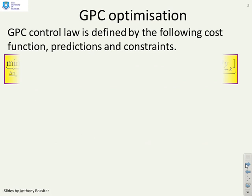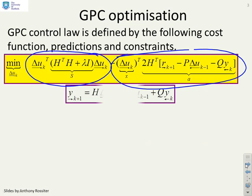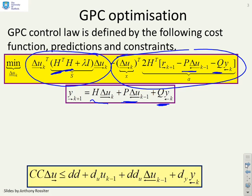First then, a reminder of how we did GPC. We had a performance index with a quadratic part and a linear part. The prediction equations for GPC took this form: H delta U future, P delta U past, Q Y past. The P and Q appeared in this part of the performance index, and the H in this part of the performance index.